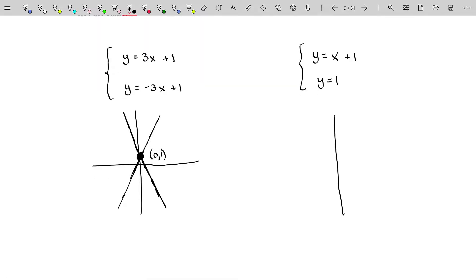So if I were to graph this, you could see, again, the very first equation goes through (0, 1), it has a slope of 1. And the second equation is just y = 1. But they both, both equations simultaneously go through the point (0, 1).